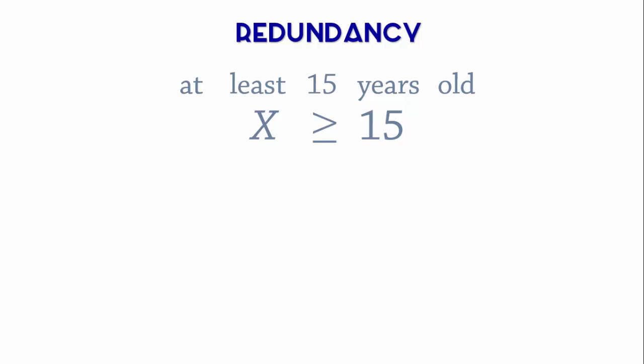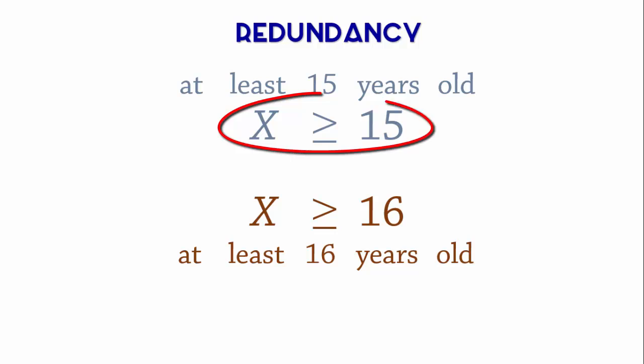Suppose also that applicants must have a valid driver's license. If the minimum licensing age is 16, then applicants must be at least 16 years old, and we have x greater or equal to 16. So we call this first constraint redundant because its effect has been overshadowed by the second constraint.